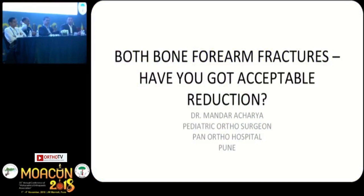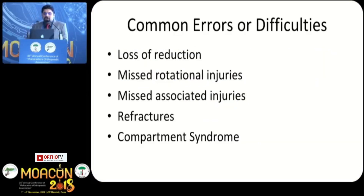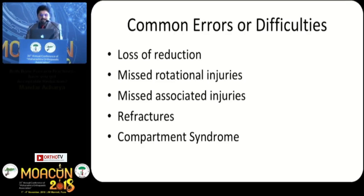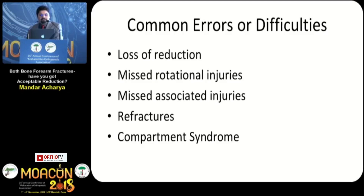I'm going to talk about both bone forearm fractures — the common errors and difficulties in managing these fractures. These include loss of reduction, missed rotational injuries, missed associated injuries, refractures, and compartment syndromes.